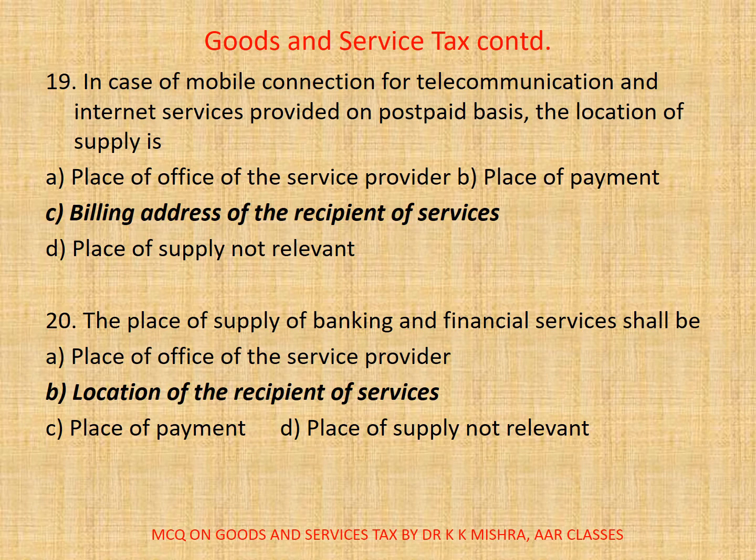Question 19: In case of mobile connection for telecommunication and internet services provided on post-paid basis, the location of supply is — A. place of office of the service provider, B. place of payment, C. billing address of the recipient of services, D. place of supply not relevant. Correct option is C: billing address of the recipient of services.